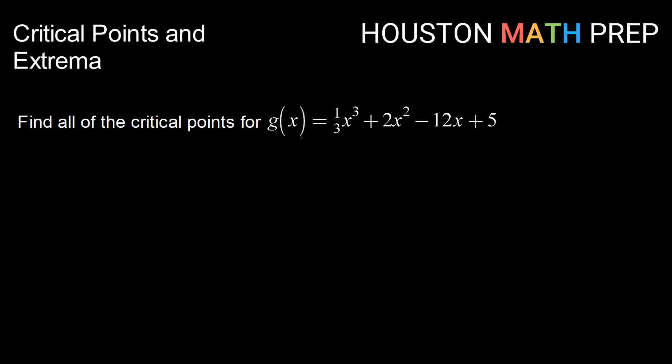the first step in finding critical points is to find the first derivative. So 3 times one-third is 1x squared, plus 2 times 2 is 4x, minus 12, plus 0. So here's our derivative,